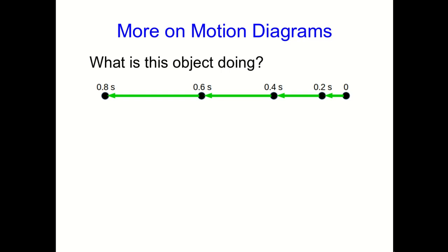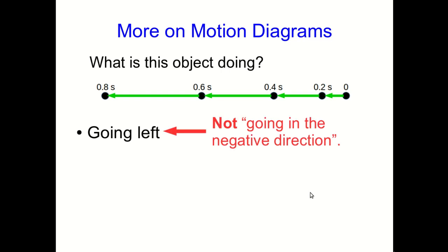So look at this motion diagram and decide what this object is doing. Be as descriptive as you can. Okay, so you've hopefully come up with some things. I'm sure you can see that it's going left. Now you might have been tempted, based on things from previous physics courses, to say that it's going in the negative direction. I'm going to say that's wrong. It's definitely going left.